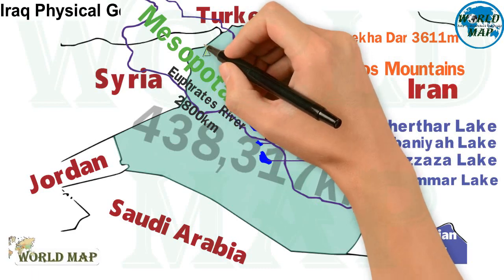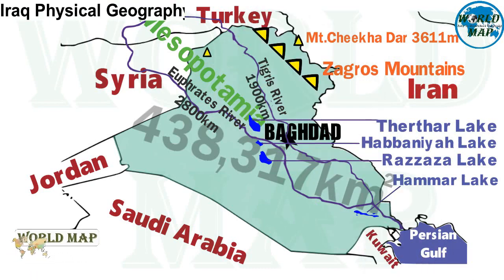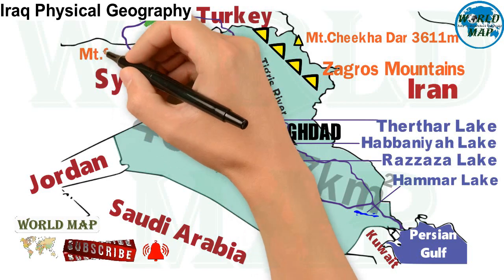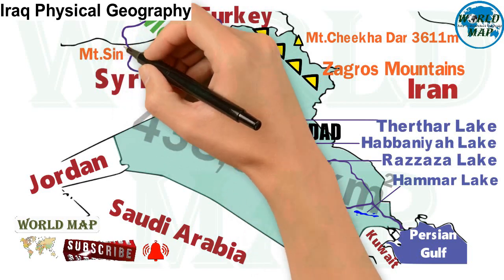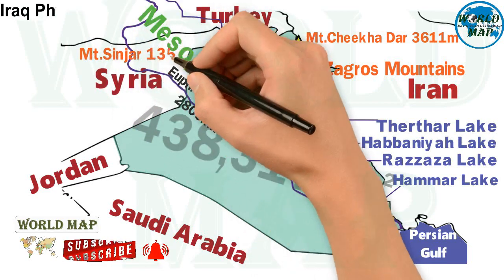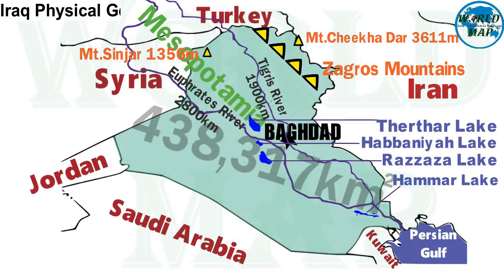The Sinjar mountains are a 100-kilometer-long mountain range that runs east to west, with a height of 1,356 meters.